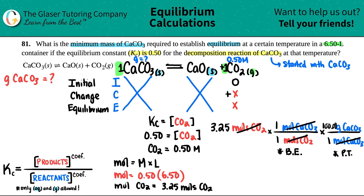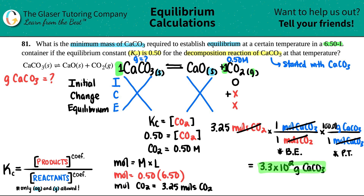So 3.25 times 100.09. I have two sig figs in the Kc, so the answer rounds to 3.3 × 10² — that's 330 grams of CaCO3. So approximately 330 grams would be the minimum mass required to bring this reaction to equilibrium.